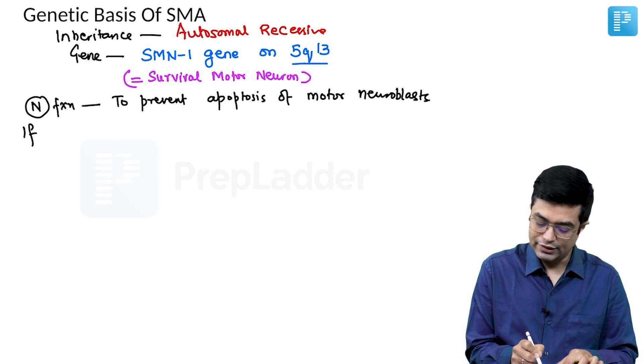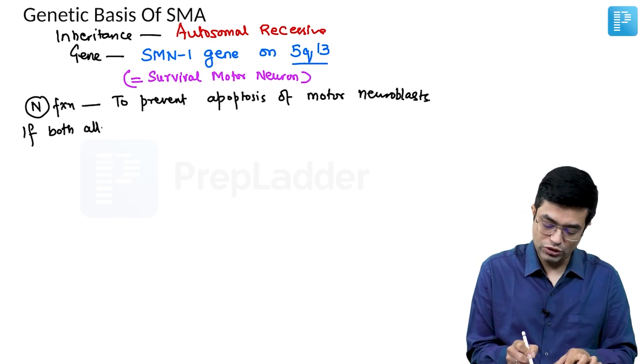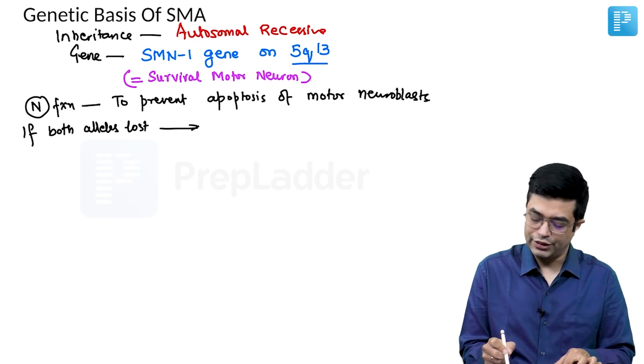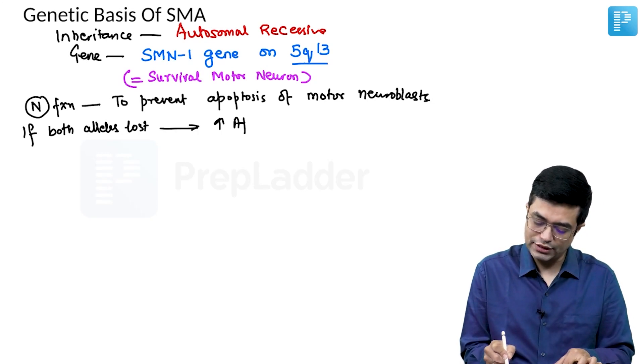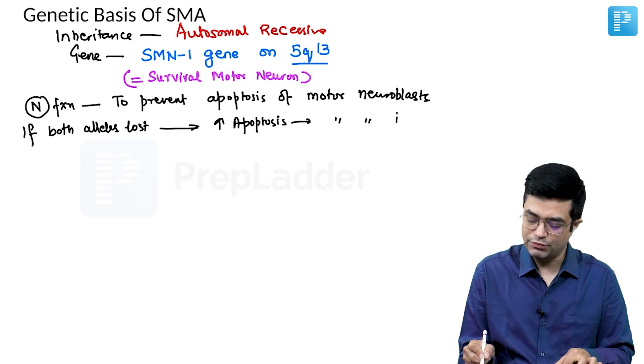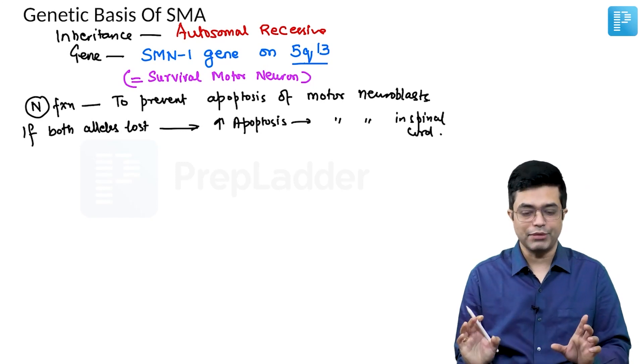If both alleles are lost, it is a recessive condition remember, so if both alleles are lost due to mutation, it will lead to increased apoptosis primarily affecting the motor neuroblasts in the spinal cord which will lead to the development of SMA.